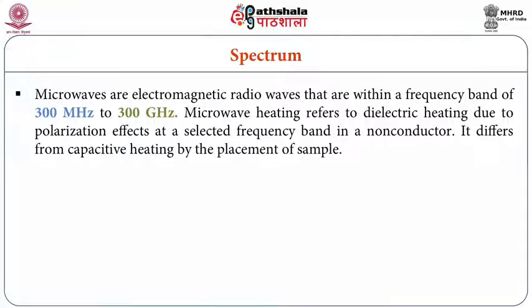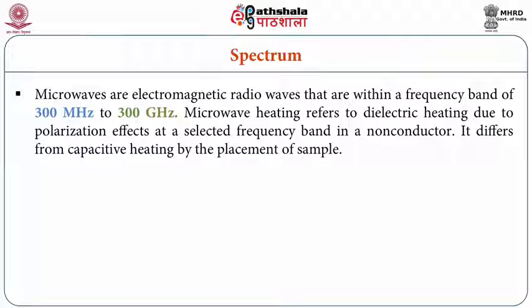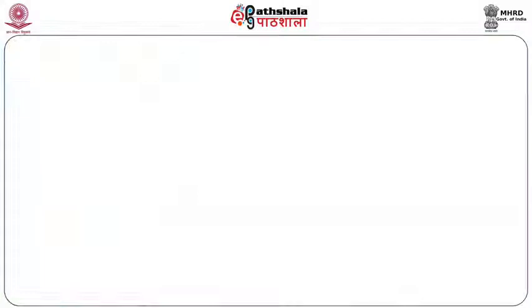Microwave heating refers to dielectric heating due to polarization effects at a selected band of frequency in non-conducting materials. Here we use a selected frequency of wavelengths for pasteurization, sterilization, or heating of food material. Generally in food applications, we use a microwave frequency of 915 MHz or 2450 MHz, though the usable range is from 300 MHz to 300 GHz. For food applications, we prefer around 915 MHz to 2450 MHz to avoid interference with other telecommunication frequencies.